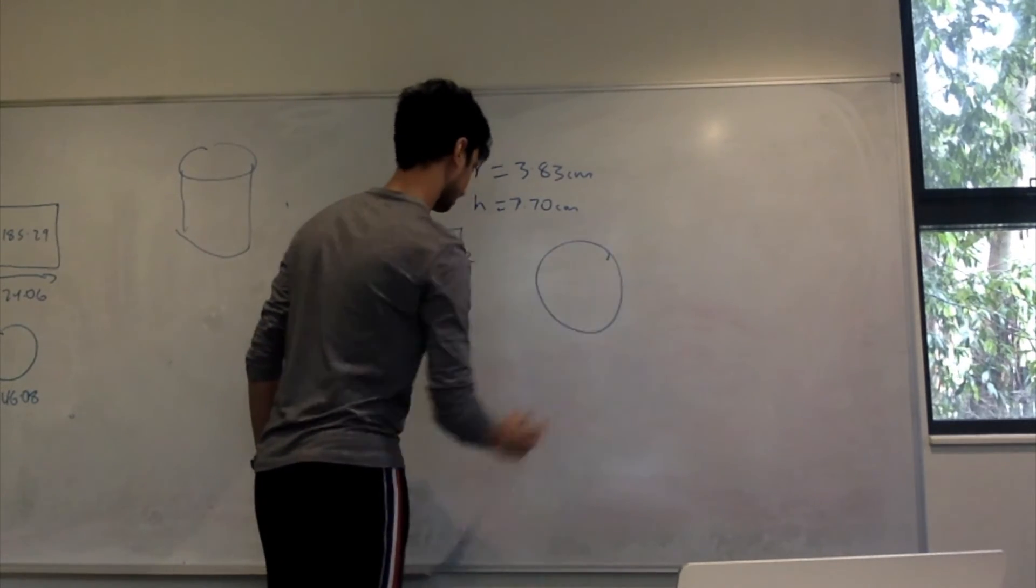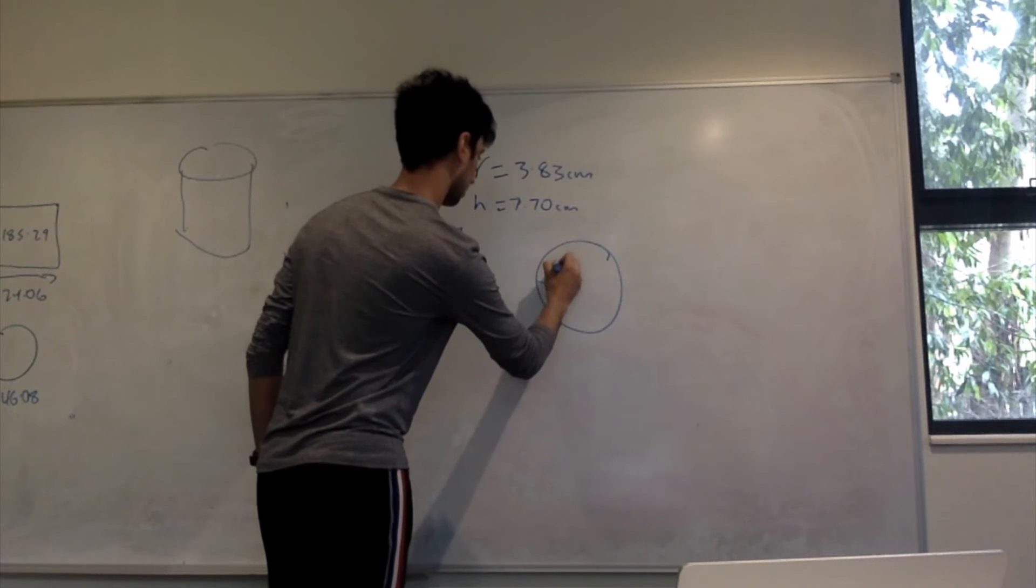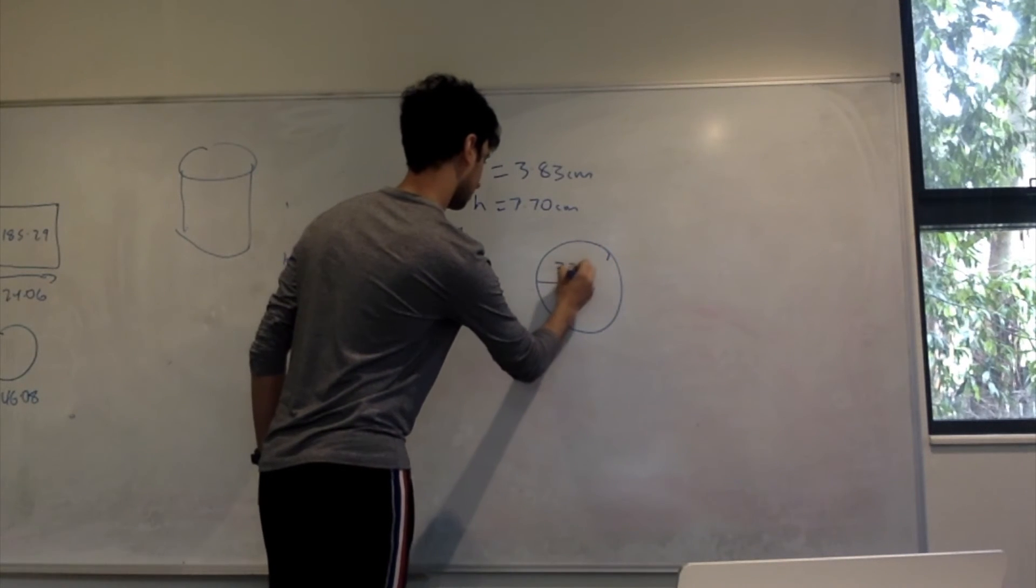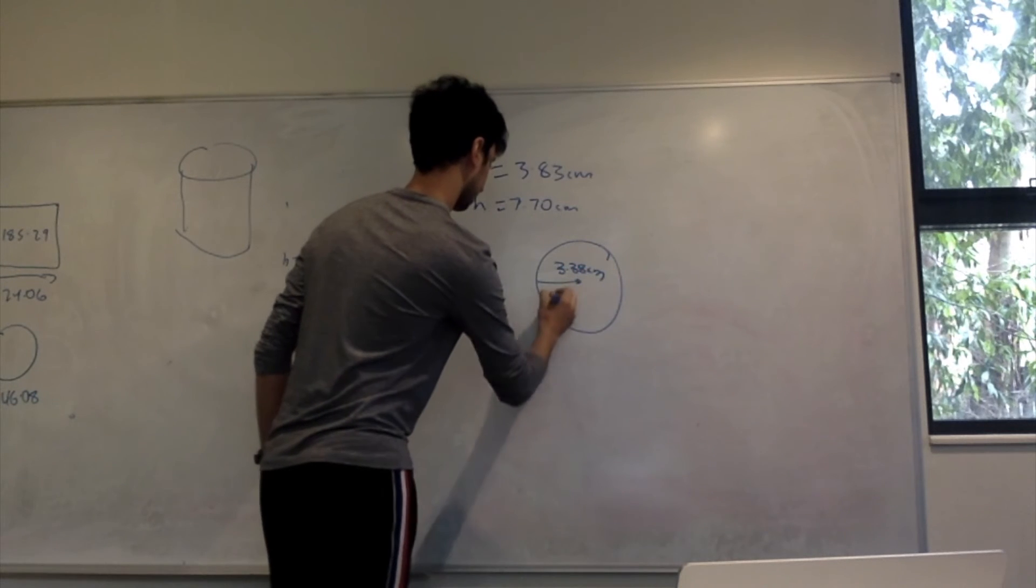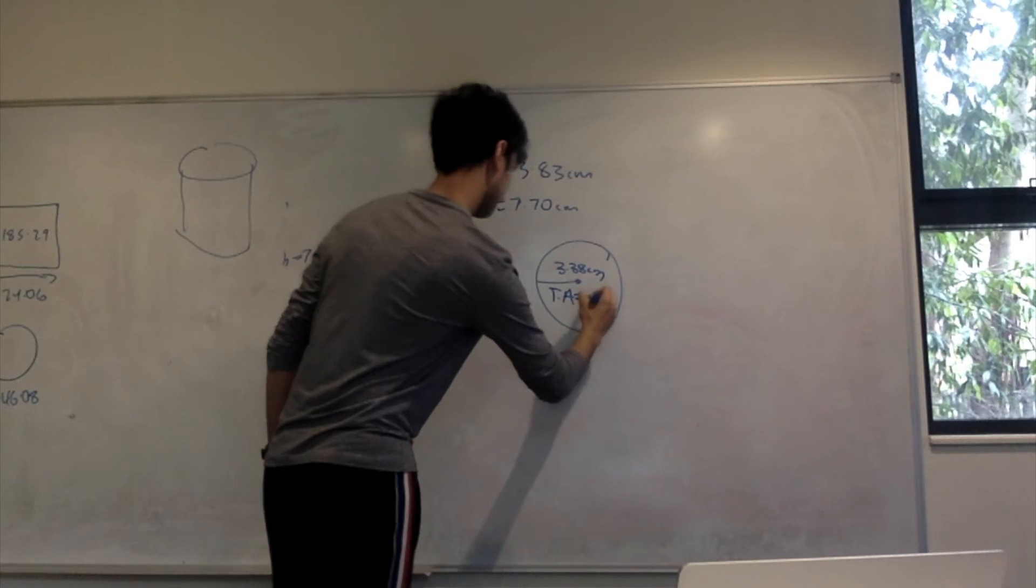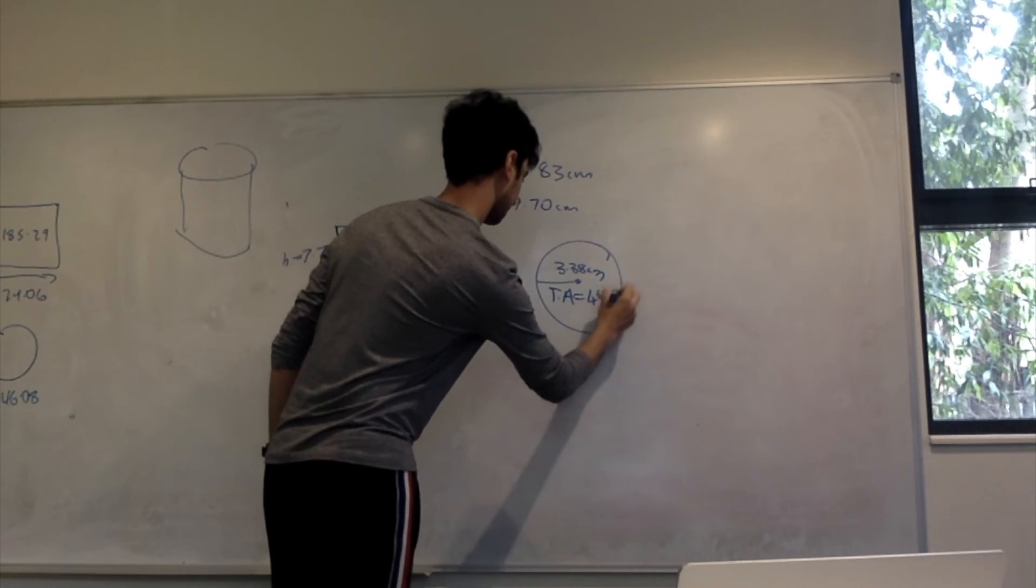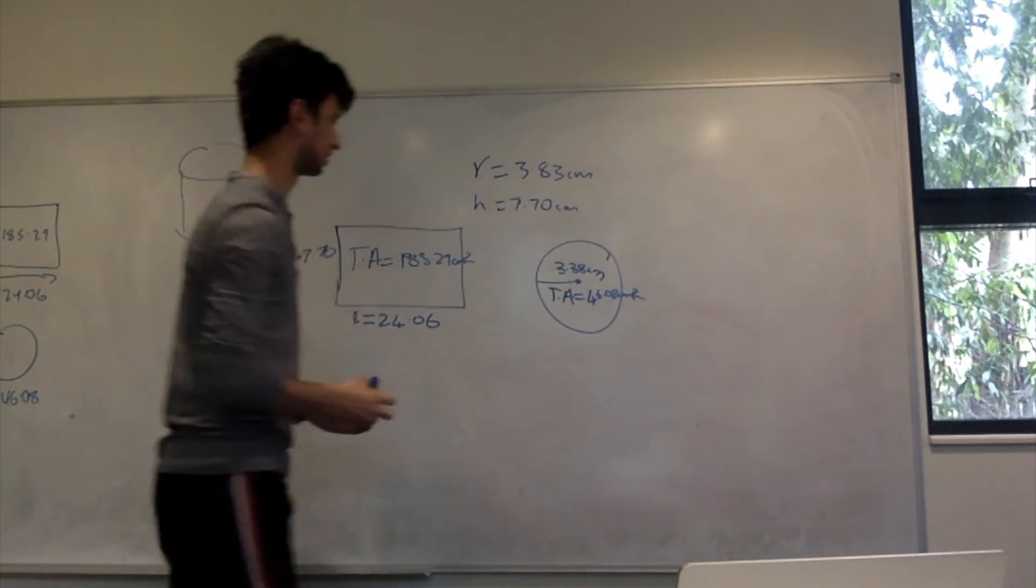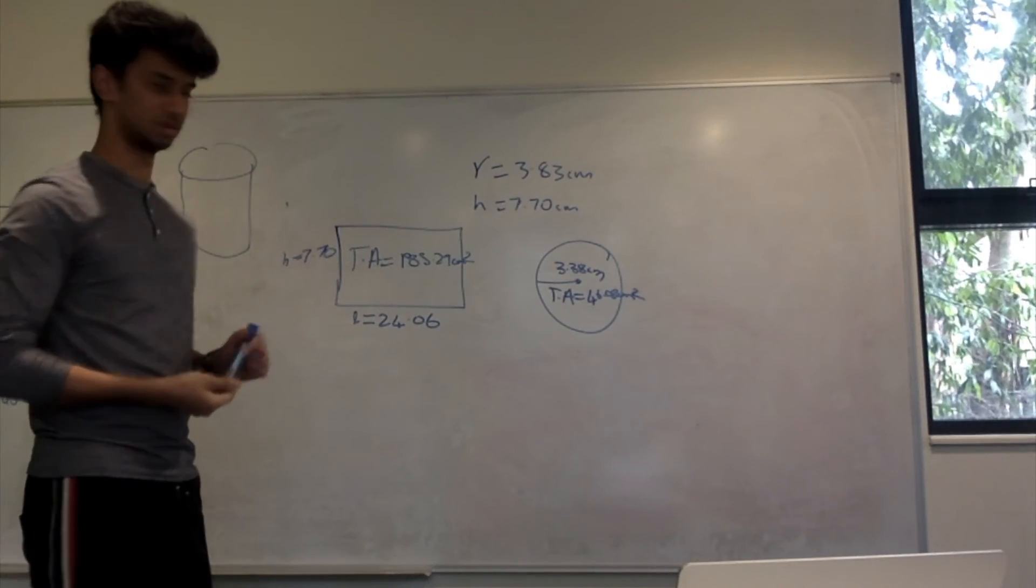And for the circles, we have two circles on the cylinder. The radius is 3.83 centimetres. So the total area of the circles would be 26.08 centimetres squared. So this is the total area we would need for the cylinder shape. Thanks a lot.